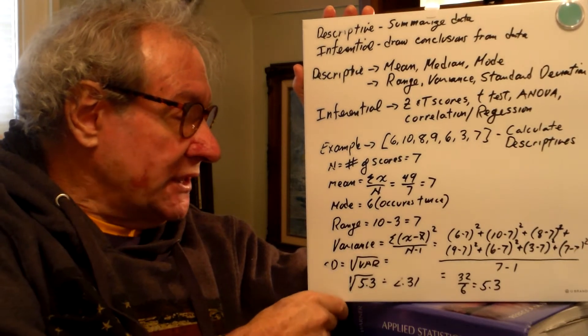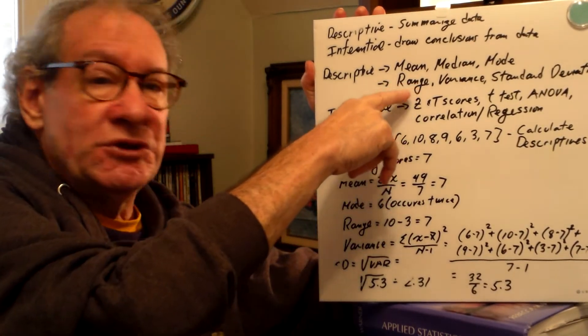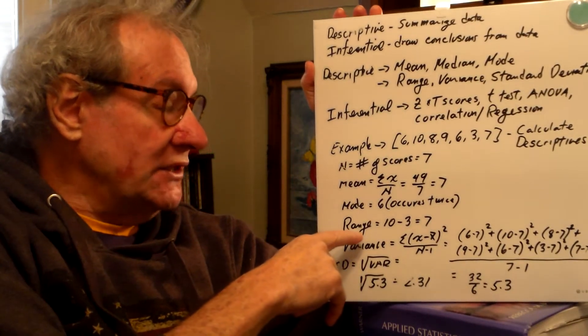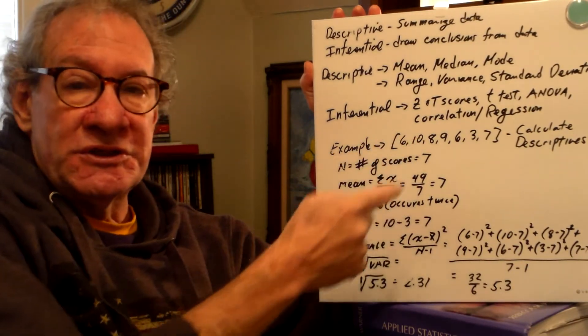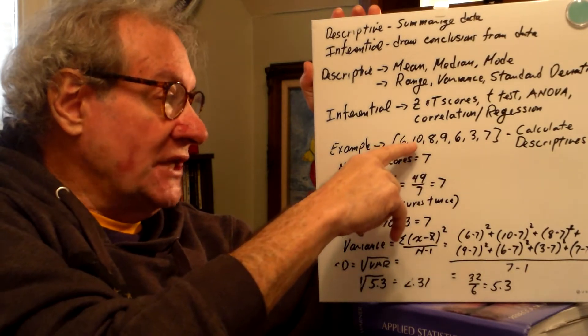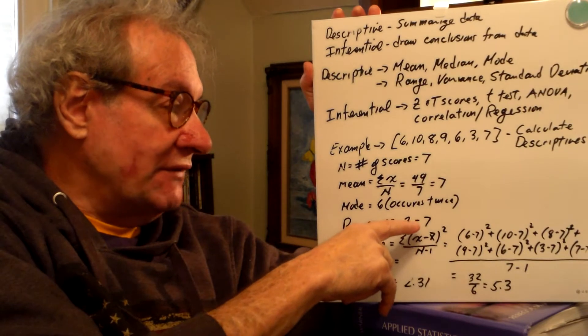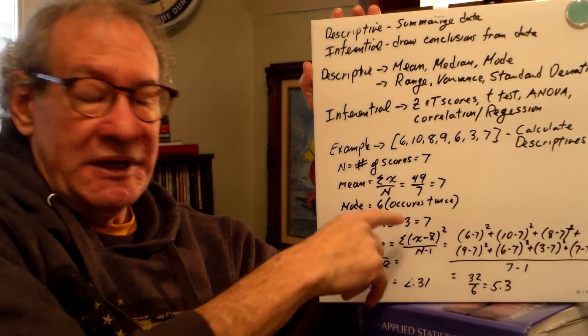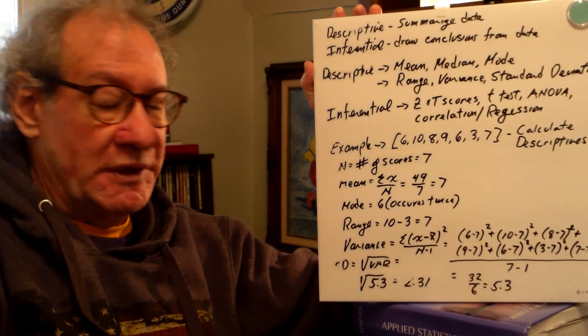A little bit more complicated are the measures of dispersion or variability. But the first one is relatively simple. The range is just telling you to take the highest score and subtract the lowest score. So if we look at our data, 10 is the highest score and 3 is the lowest score, and it just so happens the range is 7. Now that's just a coincidence. I just made these numbers up. The range is not going to equal the number of scores or anything like that. It just worked out that way.